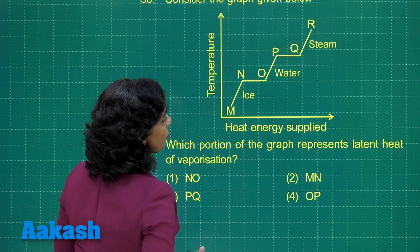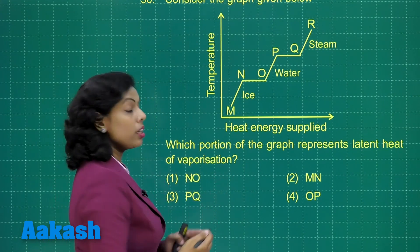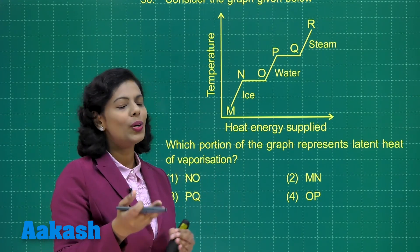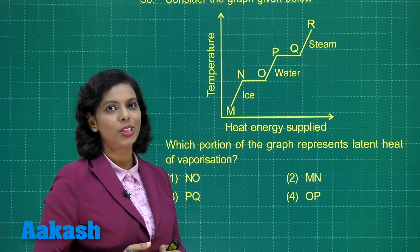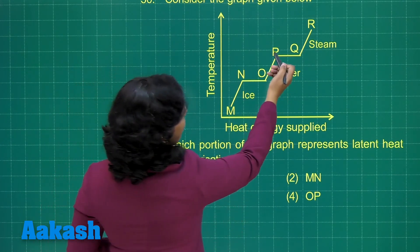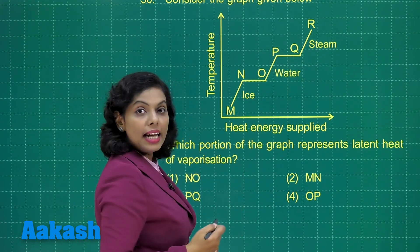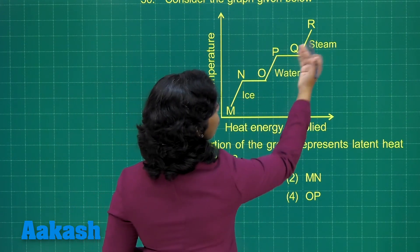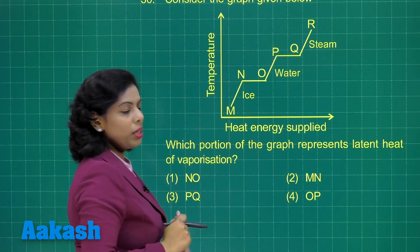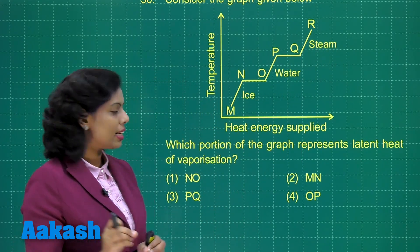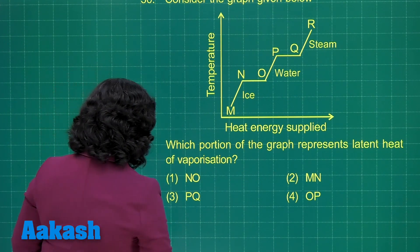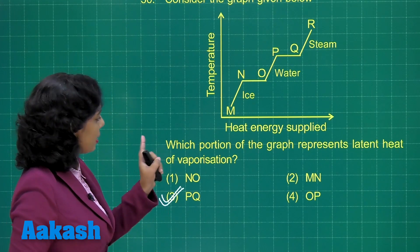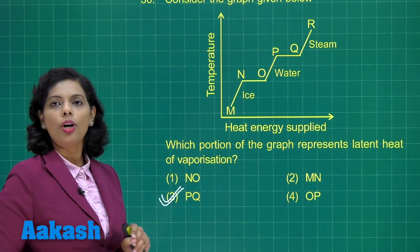The question asks specifically which portion represents latent heat of vaporization — the process in which liquid changes into vapor or steam. Looking at PQ, that portion represents that latent heat because water is getting changed into steam. So on the basis of that, the answer is PQ, which is given in option 3 — that is the correct one representing latent heat of vaporization.